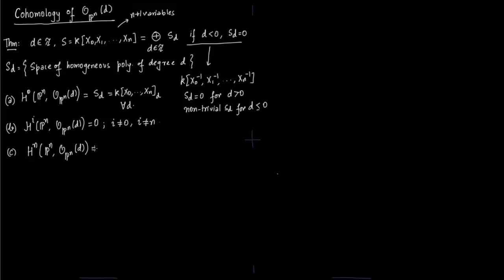For part C, you have the product x0 · x1 · x2 · ... · xn, and you take its inverse, giving the localized ring k[x0, ..., xn, (x0·x1·...·xn)^{-1}].